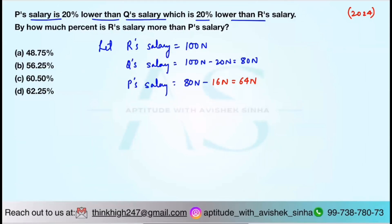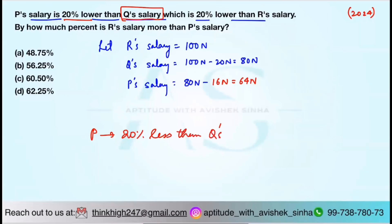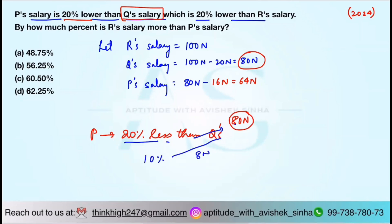P's salary is 20% lower than Q's salary. P's salary is 20% less than Q's salary. Q's salary you can find as 80N. So it is 20% less of this value. What is 10% of this value? 10% is 8N, and 20% would be 16N. So P's salary is 20% less than Q's salary.